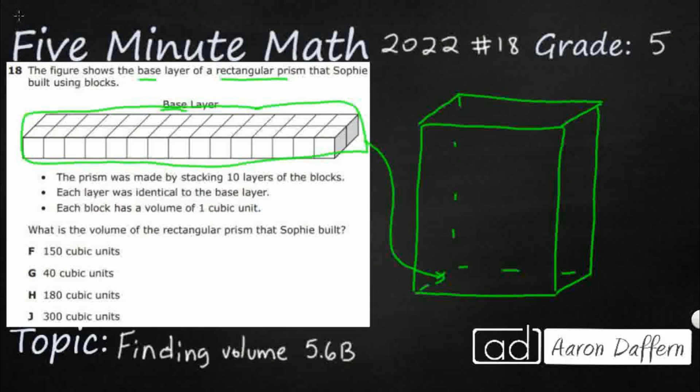And so the prism was made by stacking 10 layers. So there's a total of 10 layers. Each layer is identical to the base, and each block has a volume of 1 cubic unit. We need to find the volume of this rectangular prism.